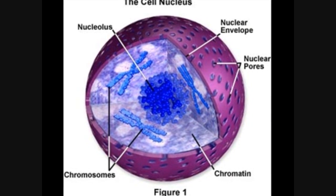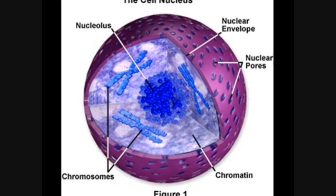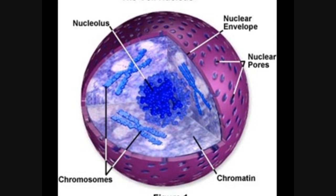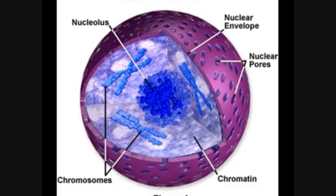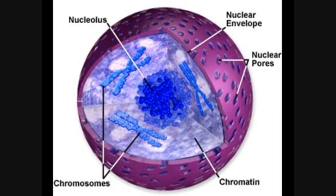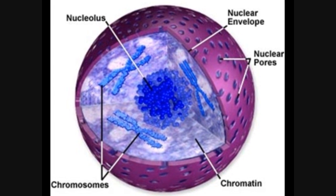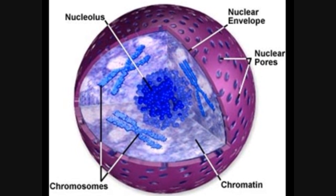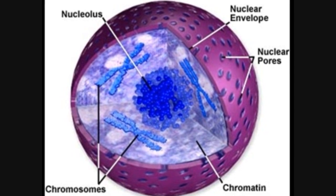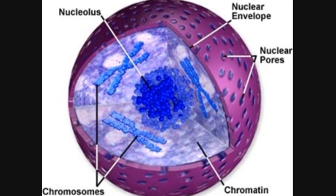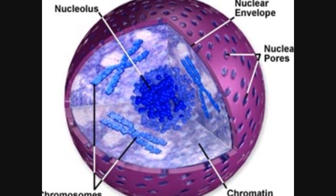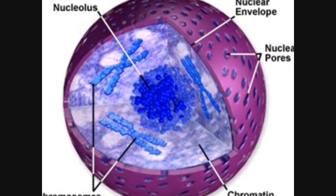The nucleus is only present in eukaryotic cells, is the control center of the cell, and contains the DNA that runs the cell. It is covered in a double layer membrane called the nuclear envelope, which is covered in many small pores. The nucleus also synthesizes ribosomes, which are important in making protein.